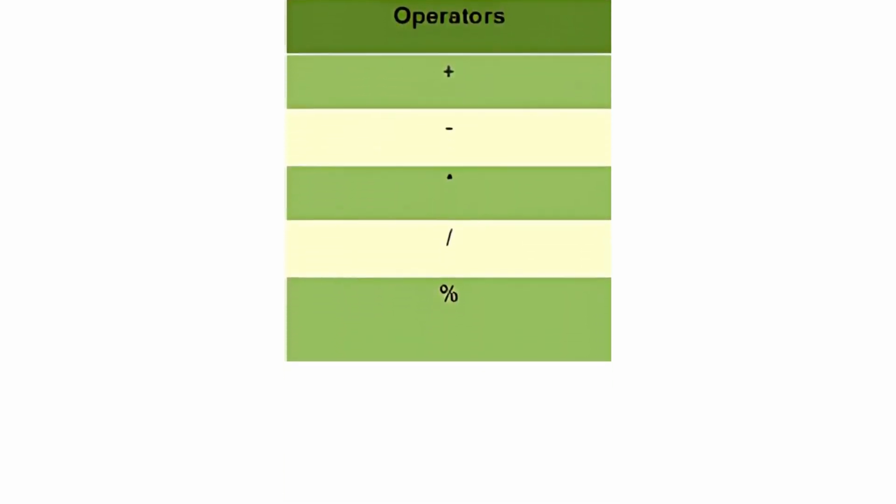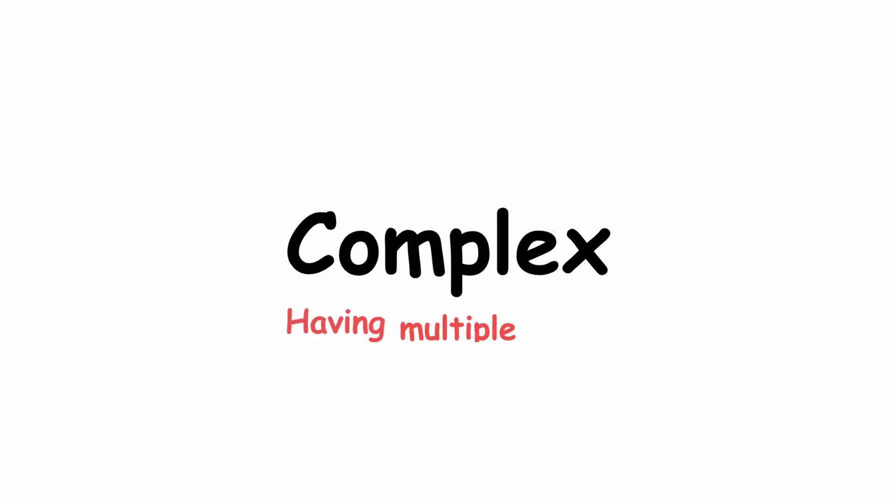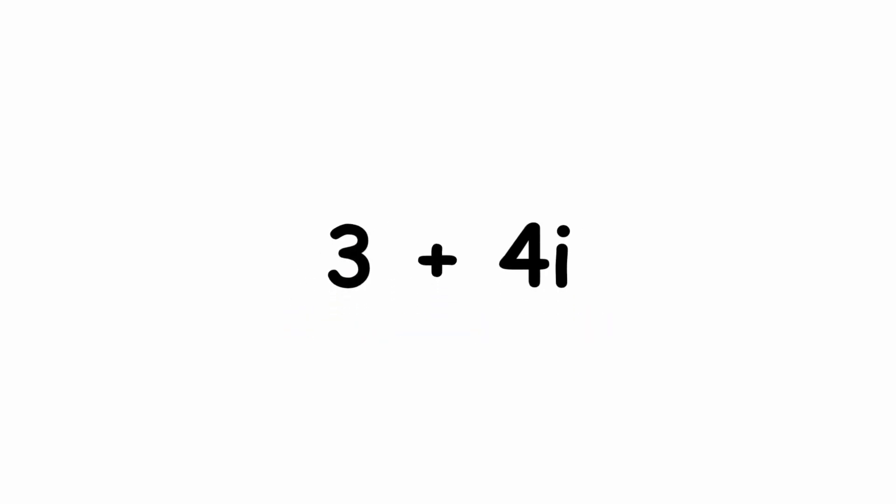So, let's think about what we can do with the number i. We can multiply i by a real number to get some product. For example, we can have 7 times i, or simply 7i. Since i is the imaginary unit, let's call i times a real number an imaginary number. What other operations can we do with real and imaginary numbers? Let's try adding a real number to an imaginary number, an example being 3 plus 4i. This number consists of multiple parts — a real part and an imaginary part. Since the word complex can mean having multiple parts, let's call this type of number a complex number.